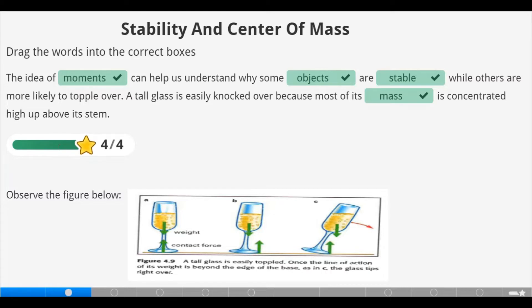That's correct. We are to observe the figure below. Looking at this glass cup, the weight in figure A is acting downward while the contact force, let's say the glass is placed on a table, is acting upwards. For figure B, the glass also as in figure A is filled with a liquid. The weight is acting downward while the contact force is also acting upwards. But for figure C, the line of action of its weight is beyond the edge of the base. So the glass will likely tip right over.